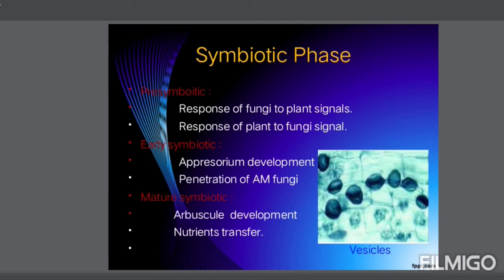In the pre-symbiotic phase, there is a response of fungi to plant signals and a response of plants to fungi signals. In the early-symbiotic phase, an appressorium develops — when the fungi settle on the surface of the roots, they produce an appressorium and penetrate into the roots. In the mature-symbiotic phase, arbuscules develop, enabling the transfer of nutrients between the plant and fungi.